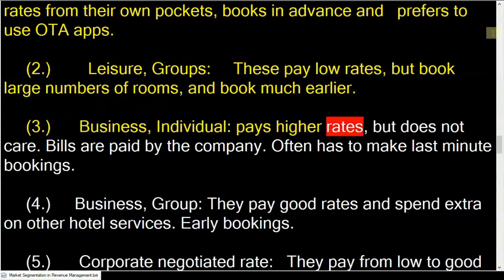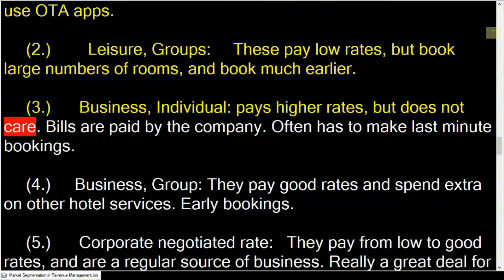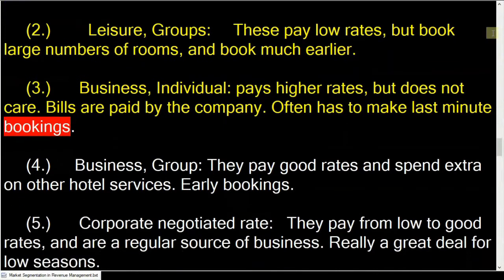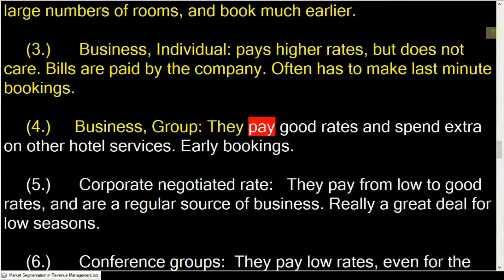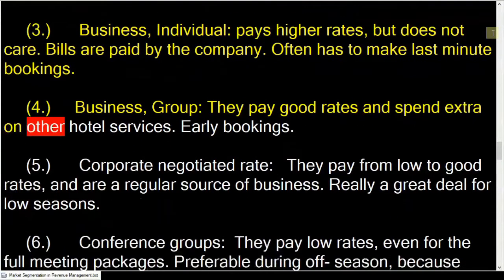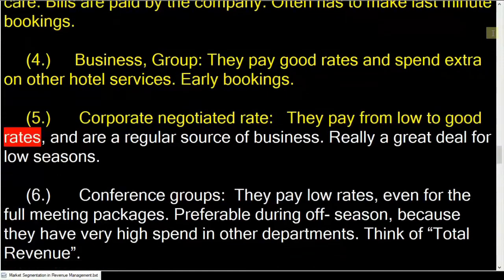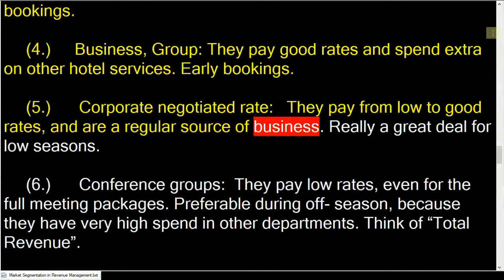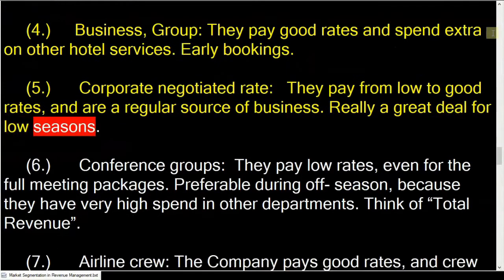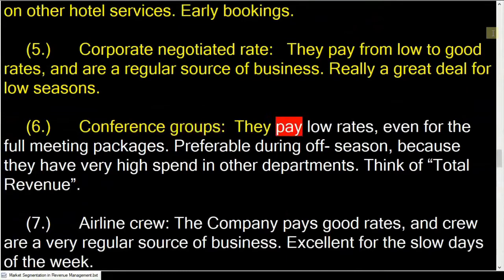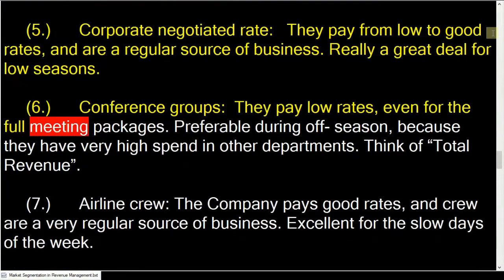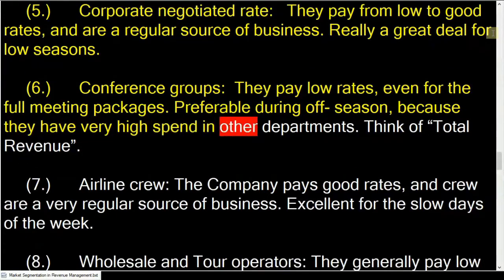Business individual: pays higher rates, but does not care — bills are paid by the company. Often has to make last-minute bookings. Business group: they pay good rates and spend extra on other hotel services, with early bookings. Corporate negotiated rate: they pay from low to good rates and are a regular source of business — really a great deal for low seasons. Conference groups: they pay low rates, even for full meeting packages, but are preferable during off season because they have very high spend in other departments. Think of total revenue.